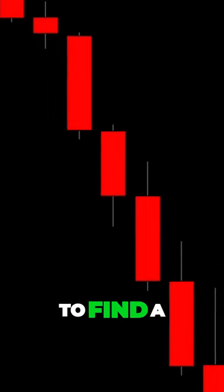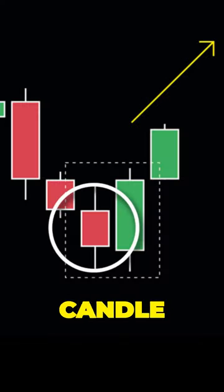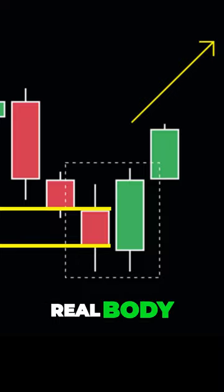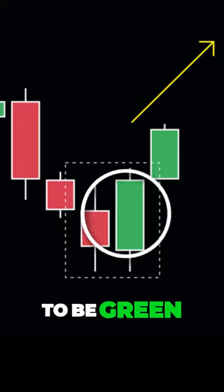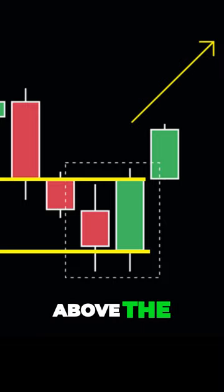Step number one is to find a move towards the downside. After this, we want to see a red candle with a small real body. The next candle has to be green and it needs to open below and close above the previous pattern.